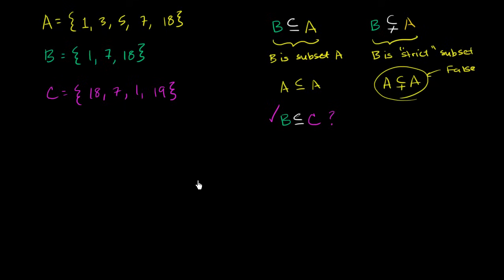Now, can we write that C is a subset of A? Let's see. Every element of C needs to be in A. So A has an 18, it has a 7, it has a 1, but it does not have a 19. So once again, this right over here is false.